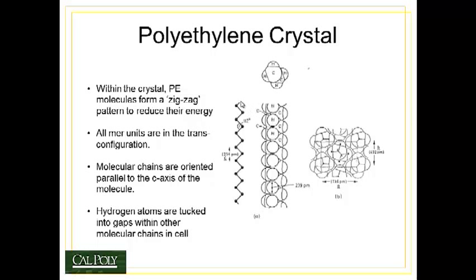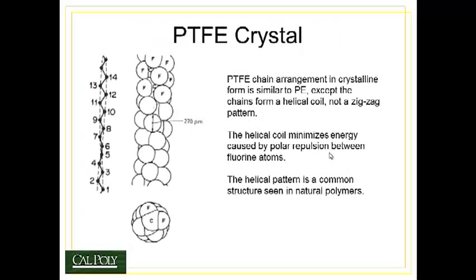The polyethylene molecule, when it organizes itself into the crystal, forms a zigzag of the carbon atoms back and forth, where all of the mer units are in the trans conformation. You have a bond angle of 112 degrees between two adjacent carbon-carbon bonds. The molecular chains are oriented parallel to the C axis of the molecule. If we look at the structure down the C axis, we'll see that the hydrogen atoms are tucked into the spaces between two polyethylene molecules. This is the lowest possible energy state for the system.